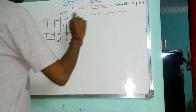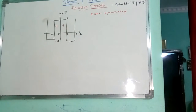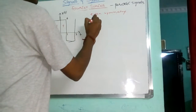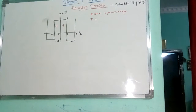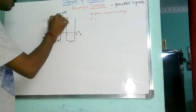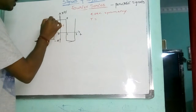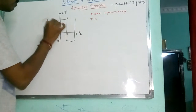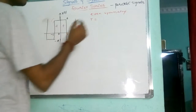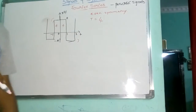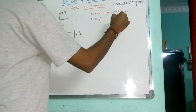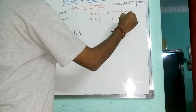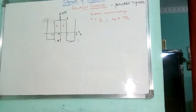Next, next thing is finding out the time period. So, what is the time period of this signal? I will consider it from this peak to this peak, from here to here. So, my time period is 4. So from here, omega naught is pi by 2. And the fundamental frequency I got.